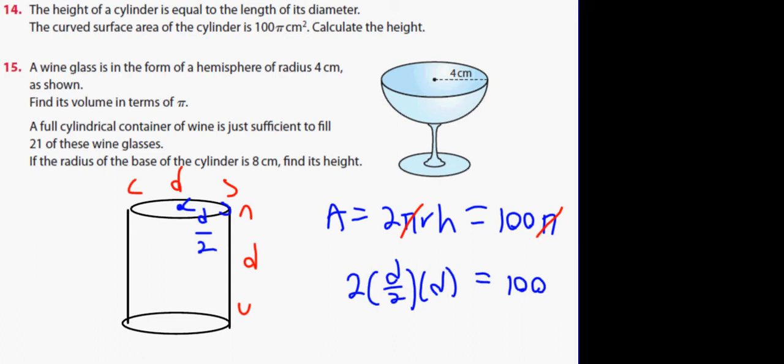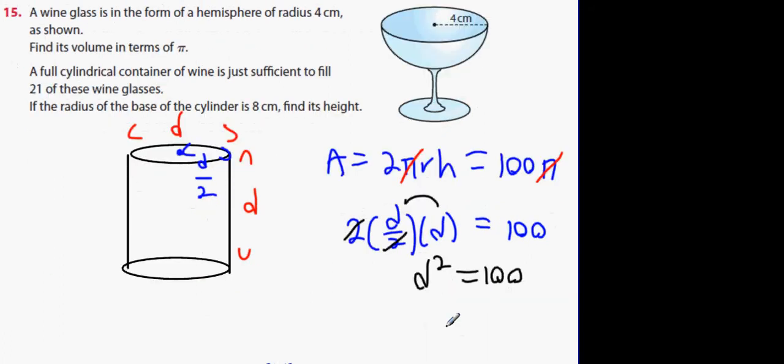Now what happens to the 2's? If you multiply by 2 then you divide by 2, you're actually doing nothing are you? So they can cancel. And what we're gonna get is D multiplied by D is D squared. D squared equals 100. Therefore the height of the object is the square root of 100 which is 10.